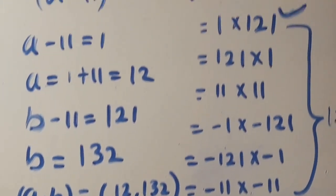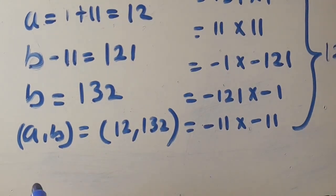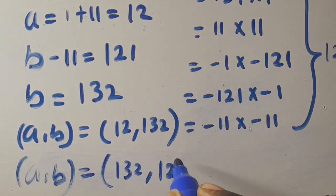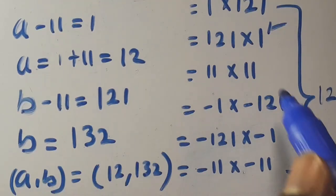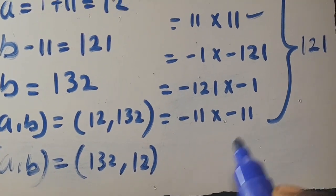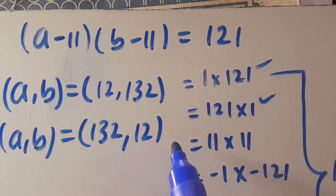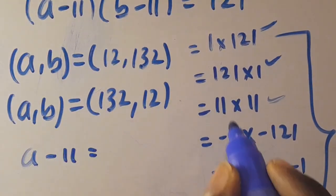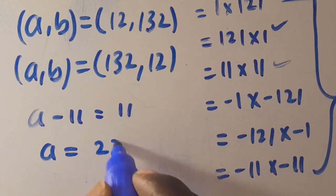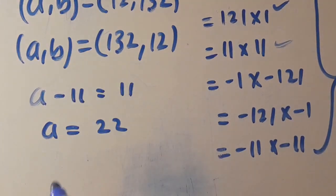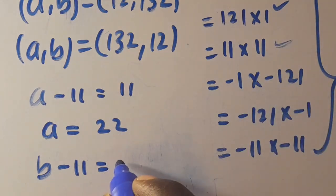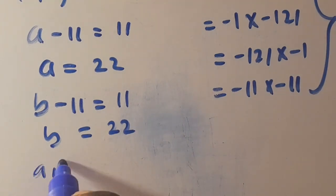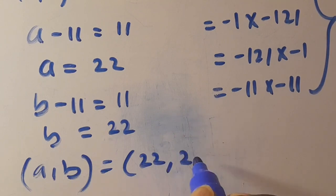By symmetry, the reciprocal pair gives (a, b) = (132, 12). For the second factor pair, a - 11 = 11 gives a = 22 and b - 11 = 11 gives b = 22, so (a, b) = (22, 22).